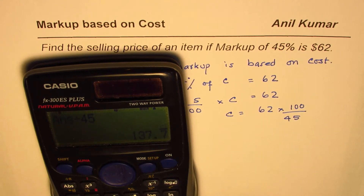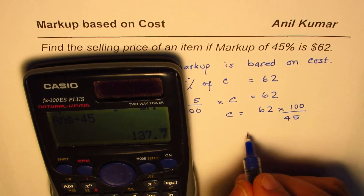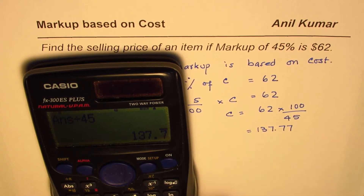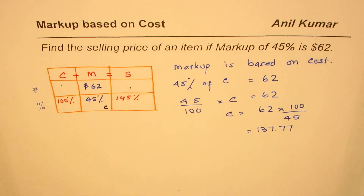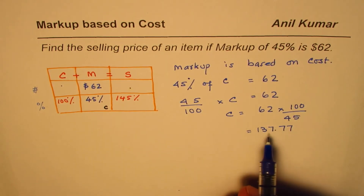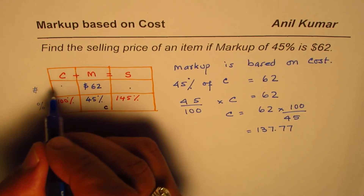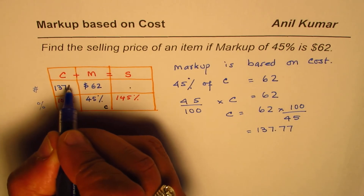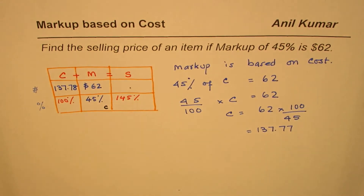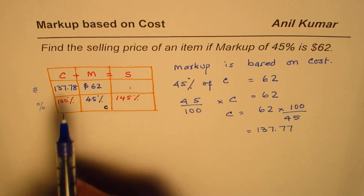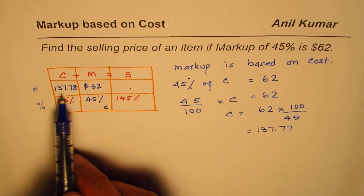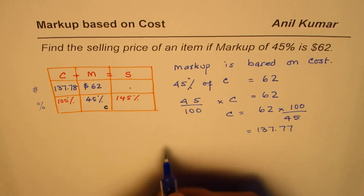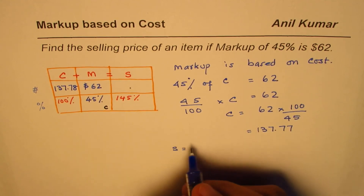Let's calculate: 62 times 100 divided by 45 equals 137.77 in decimals. So the cost price is approximately $137.78 when rounded up.